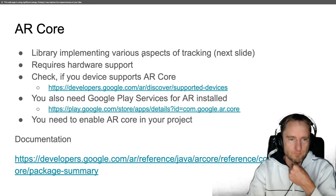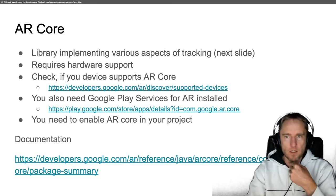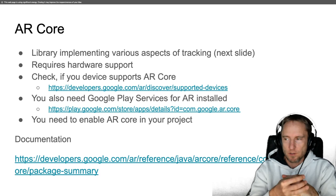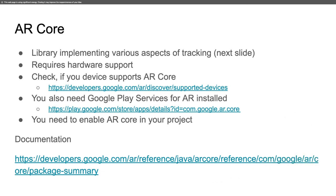AR Core is a library provided on the Android platform that requires certain hardware support for the device to handle tracking. You can check if your device is supported by checking the list on the Google Developer site. You also need Google Play Services for AR installed, which you can download from Google Play — if you've ever used any AR apps on Android, you probably already have it installed.